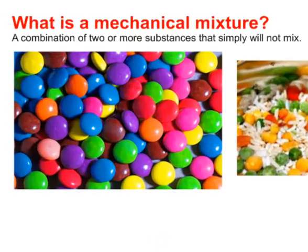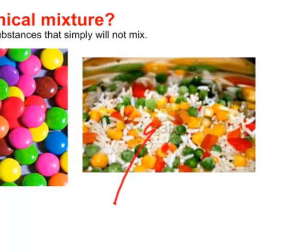What's a mechanical mixture? A combination of two or more substances that simply will not mix. Here's a picture of some smarties—you can definitely see each individual smarty, they can't hide themselves, they look quite different. Here's a rice dish with vegetables—it's quite easy to pick out an individual pea or red pepper. You can tell this is a mixture, and no matter how much you stir fry they're not going to mix, they're going to remain in their separate pieces.